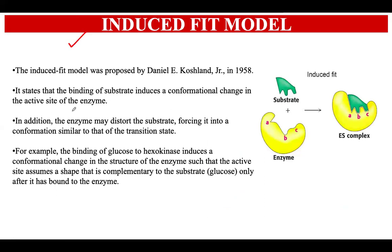The next model is the induced fit model. This was proposed by Koshland in 1958 and is different from the lock and key model. In the lock and key model, the shape of the active site is rigid and not flexible. This model, however, suggests that the shape of the active site of the enzyme is flexible and can change its conformation.